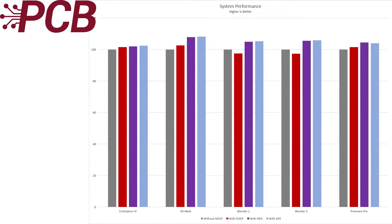But do these changes make any difference? Unfortunately, they didn't. As we can see from our chart, if PBO was already enabled, also enabling APE does not add any appreciable effect. For Civ 6, 3DMark, and Blender, the improvement over having generic PBO enabled was less than half a percent — frankly, this could be within the margin of error. On Premiere Pro, the results were actually slightly worse by about half a percent.